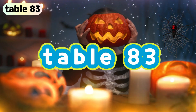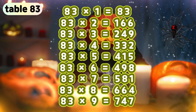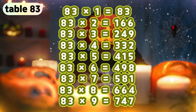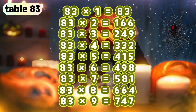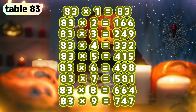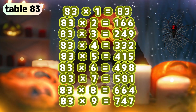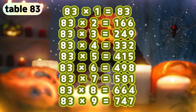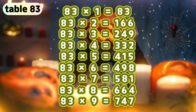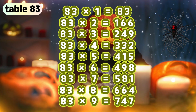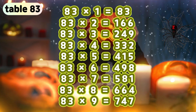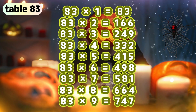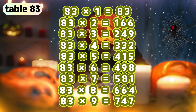Table 83. 83 times 1 is 83. 83 times 2 is 166. 83 times 3 is 249. 83 times 4 is 332. 83 times 5 is 415. 83 times 6 is 498. 83 times 7 is 581. 83 times 8 is 664. 83 times 9 is 747.